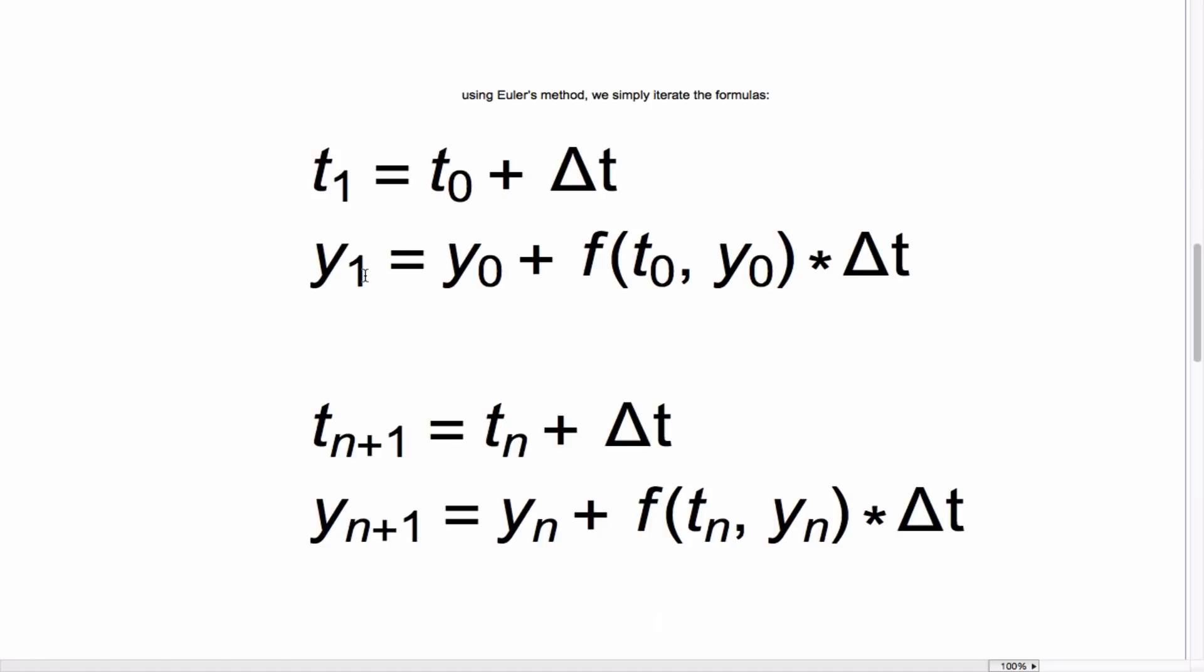The corresponding y values are approximated as follows. For example, y1 is y0 plus the slope, which is calculated at t0,y0 times delta t. Thus, our numerical solution is generated by iterating these two functions right here. This procedure is referred to as Euler's method.